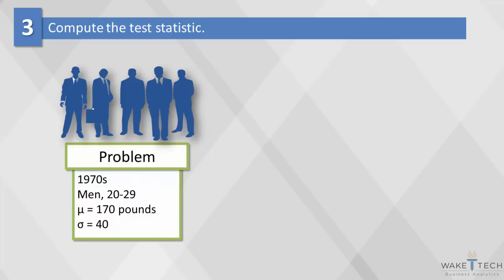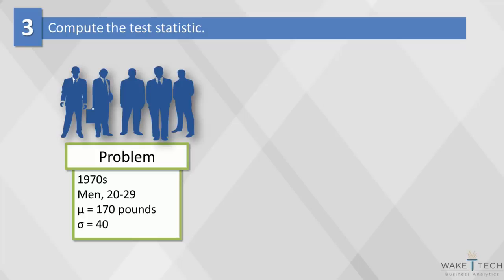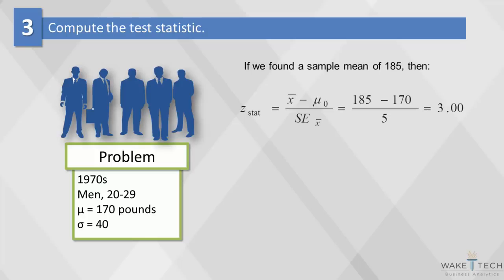To compute the z statistic, we simply insert values derived from our sample into the formula. If in one sample we found that the sample mean was 173, then the z statistic would be 0.60. Think of this value on the x-axis under a standard normal curve. Let's say we found the sample mean to be 185. Putting these values into the z-stat formula, we find the z-stat is 3.0. This is much higher at the tail end of the x-axis on a normal distribution.